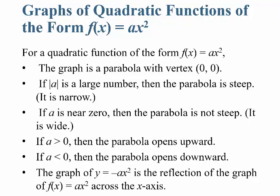The graph is a parabola with vertex at 0, 0. If the absolute value of a is large, the parabola is steep and looks skinny and narrow. If a is near zero, like a fraction, the parabola is wider. If a is greater than zero, the parabola opens upward. And if a is a negative number, like negative 1 half, the parabola opens downward.